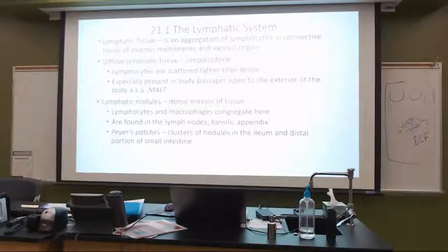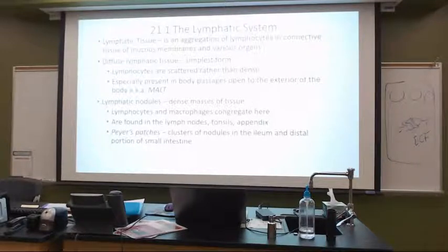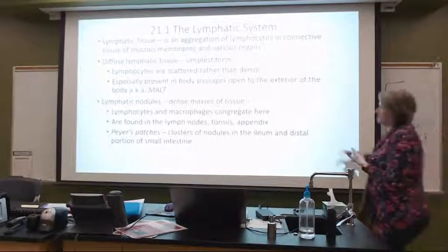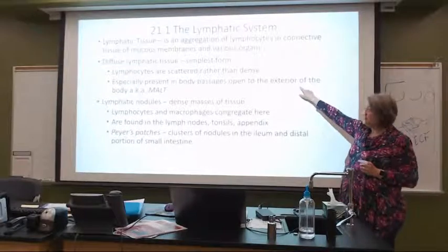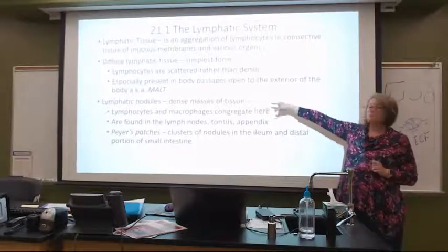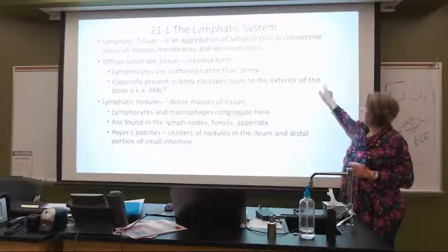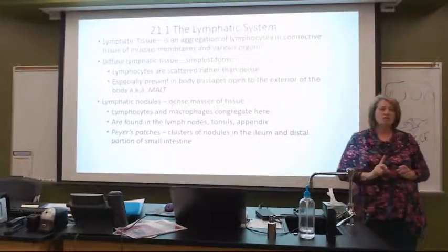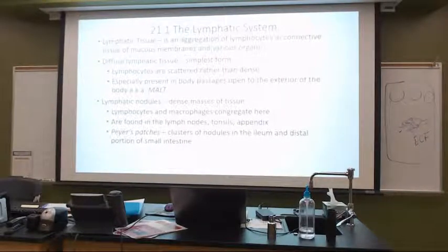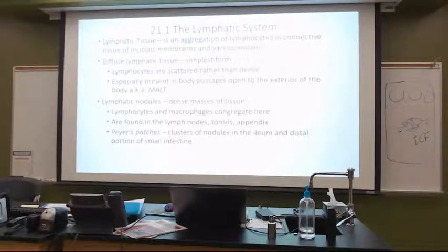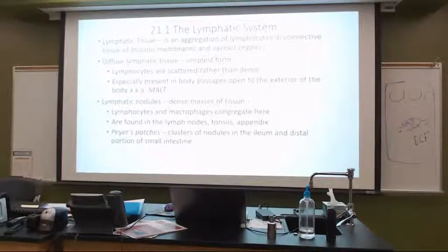This is where lymphocytes are just kind of scattered about. They are really present — those cells, the lymphocytes, the white cells — in body passages open to the exterior of the body. Any opening we have to the outside environment is lined by these mucous membranes, and in these mucous membranes they have a bunch of these lymphocytes.